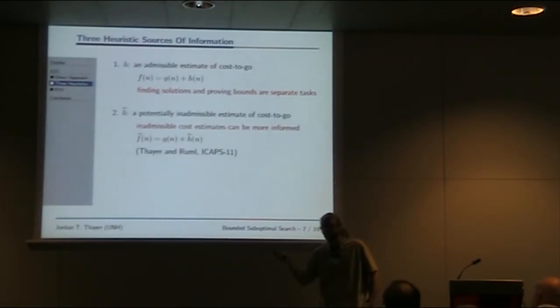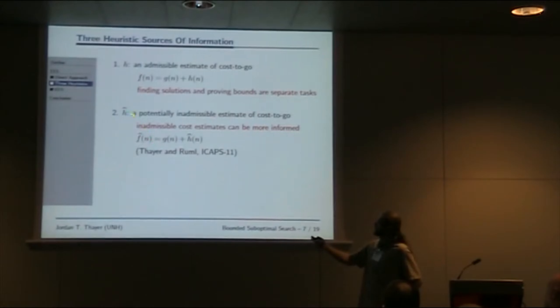The next source of information is h-hat of n, a potentially inadmissible estimate of cost-to-go. It's our best effort to estimate how expensive a solution beneath a node is. We don't want to always underestimate or overestimate. We want to be as close as we can get. From h-hat, we build f-hat, the total cost. Instead of being a lower bound, it's our best possible estimate. These accurate estimates can be constructed by hand or learned online during search.